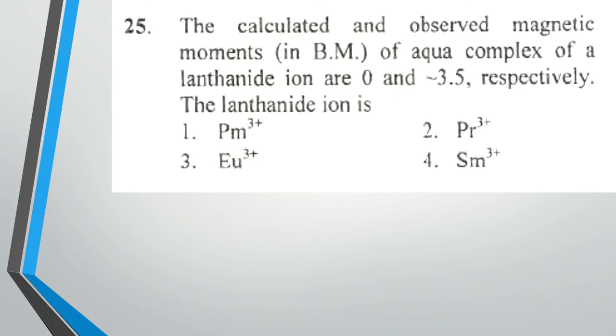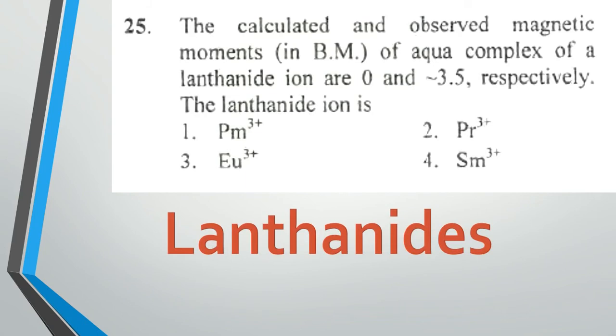The lanthanide ion is: Option 1, Promethium 3+; Option 2, Praseodymium 3+; Option 3, Europium 3+; Option 4, Samarium 3+. Here the question is about lanthanides and they are asking about the magnetic moments of the lanthanides.